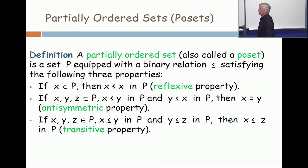A POSET is a set equipped with a binary relation, this less equal sign, and it satisfies three properties. They're called respectively a reflexive property, an anti-symmetric property, and a transitive property.